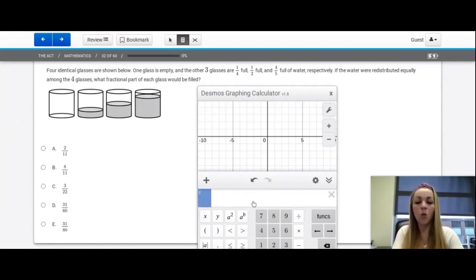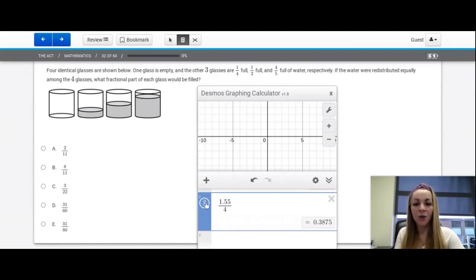We're going to evenly distribute that among the four glasses. So we're going to take 1.55 divided by four. And this button right here will change it into a fraction that will match our answers. And so if I press that, I see that I get 31 over 80, which is option E.